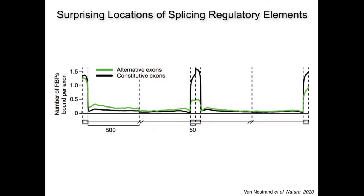One surprising finding is that traditionally, people studying splicing have thought of regulatory elements as located very close to the alternative exon. But we find a strong enrichment for RNA binding protein binding sites in the far upstream region of the intron flanking the alternative exon — specifically just downstream of the splice site of the very upstream constitutive exon. This is a region very few people have looked at as being involved in regulation of alternative splicing, but it strongly suggests this is an area researchers should explore in the future.